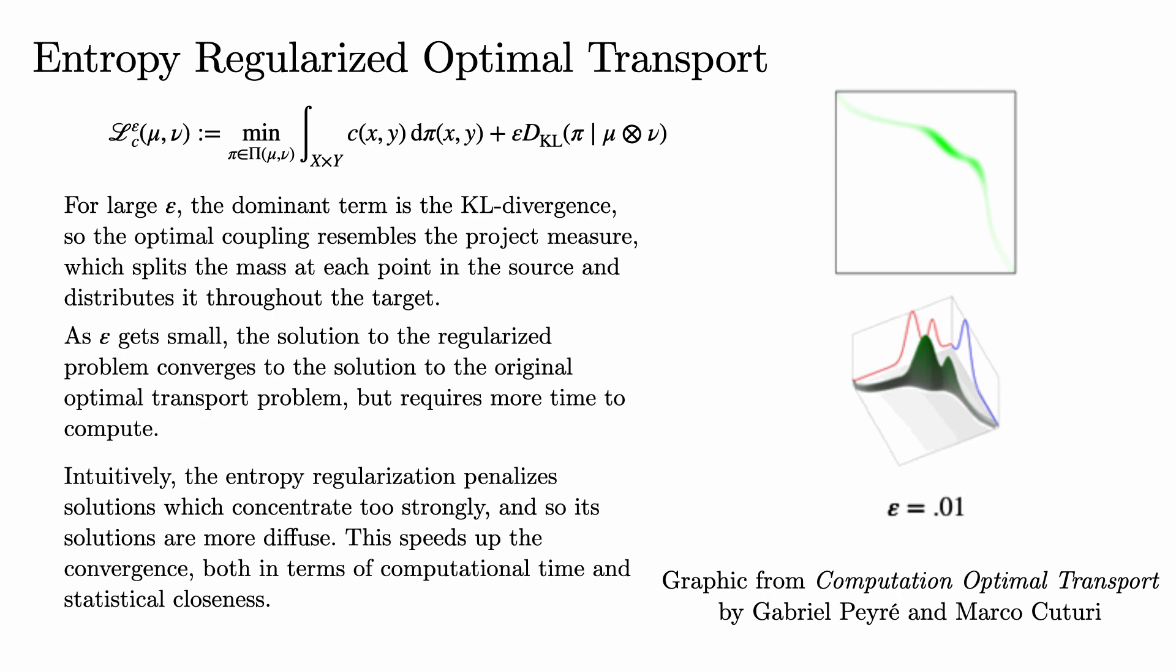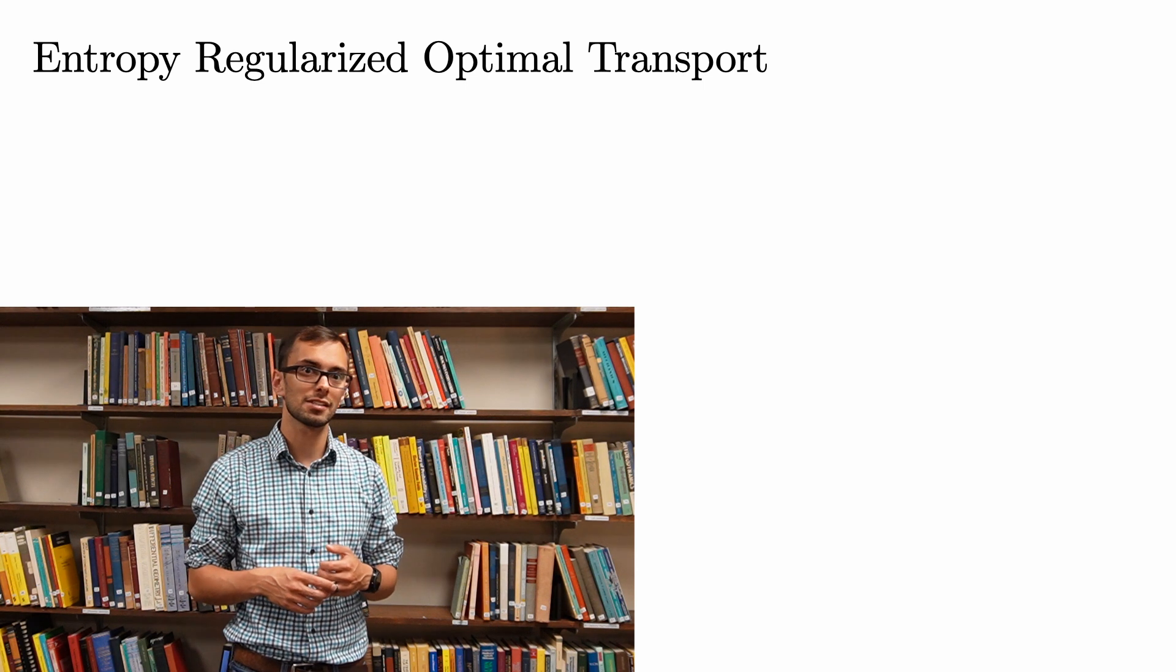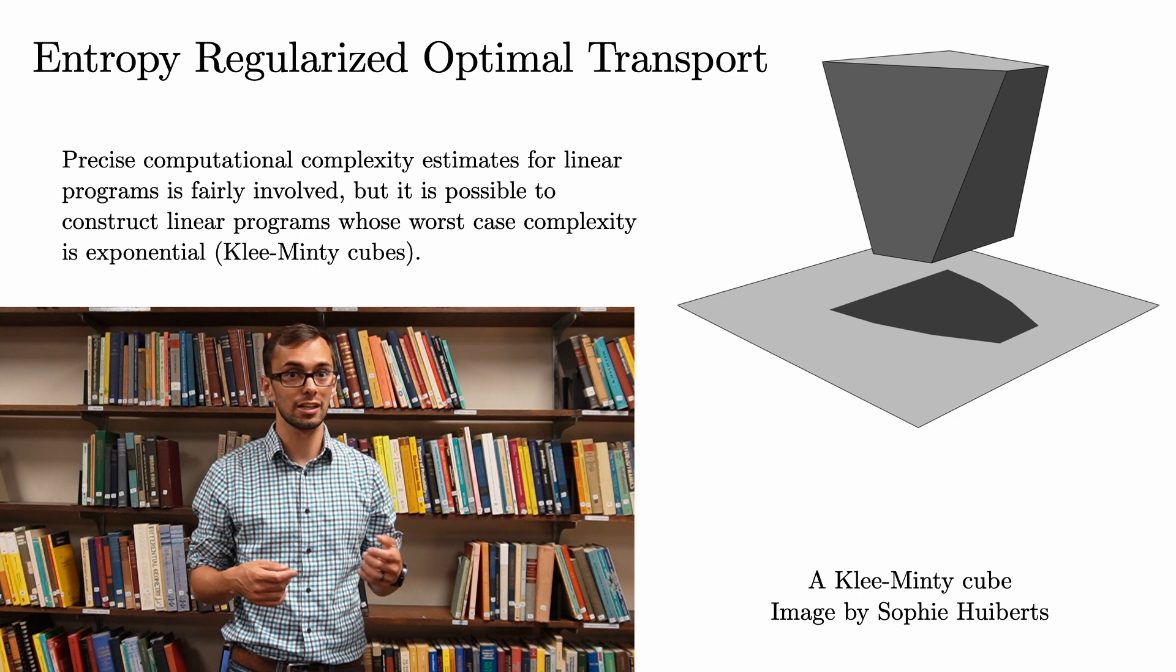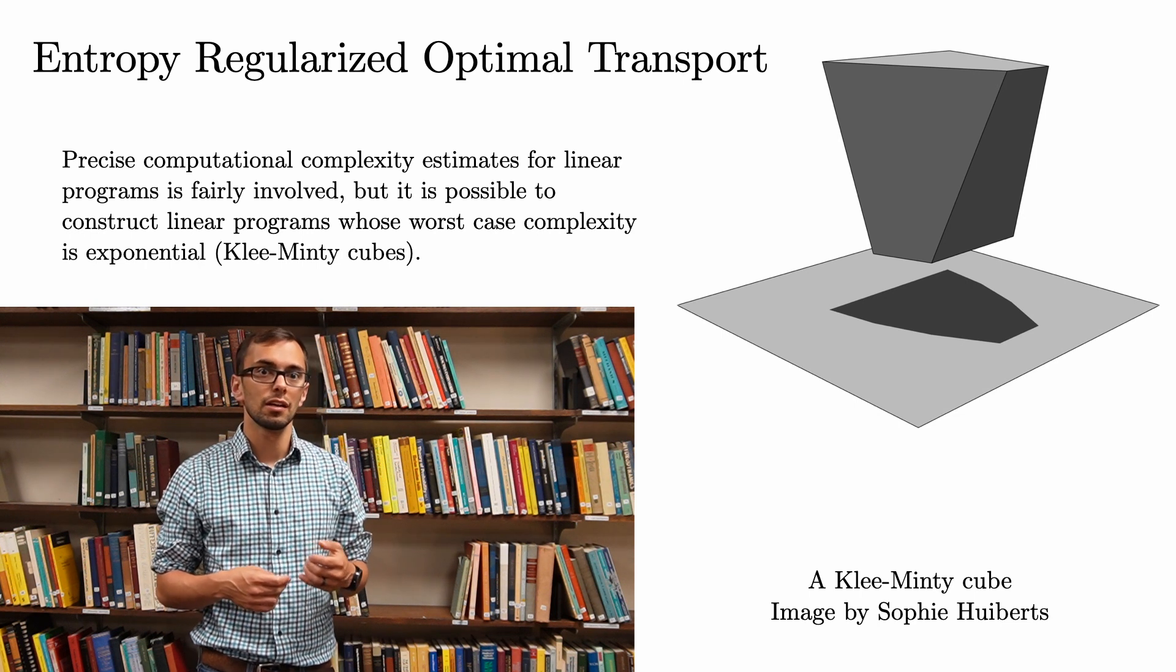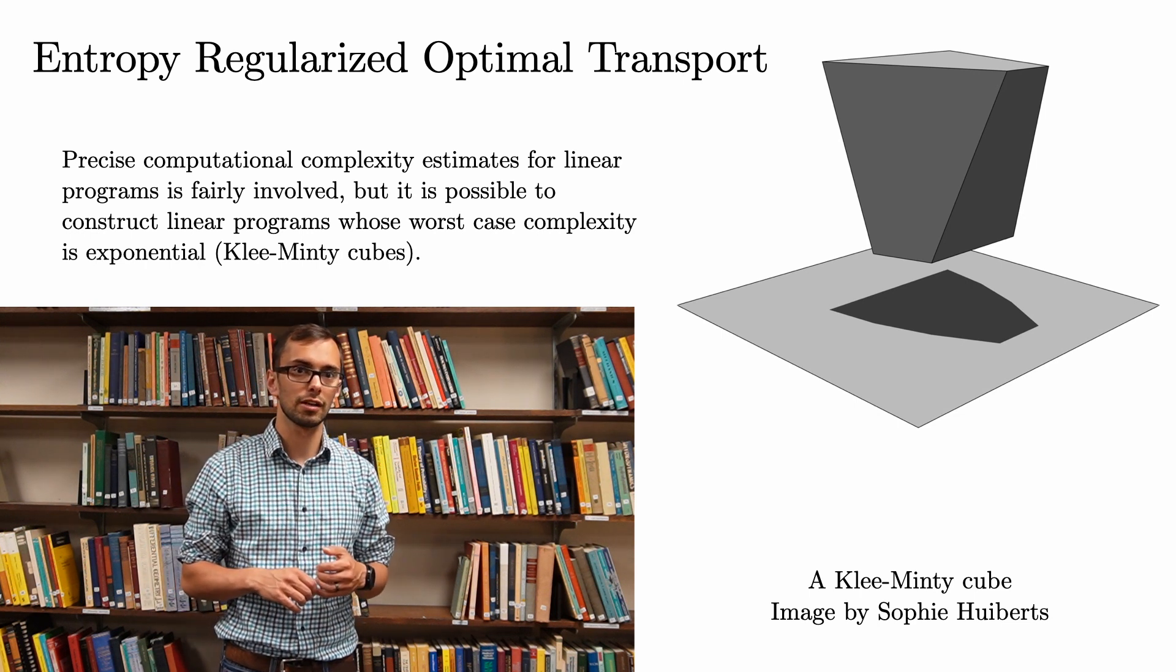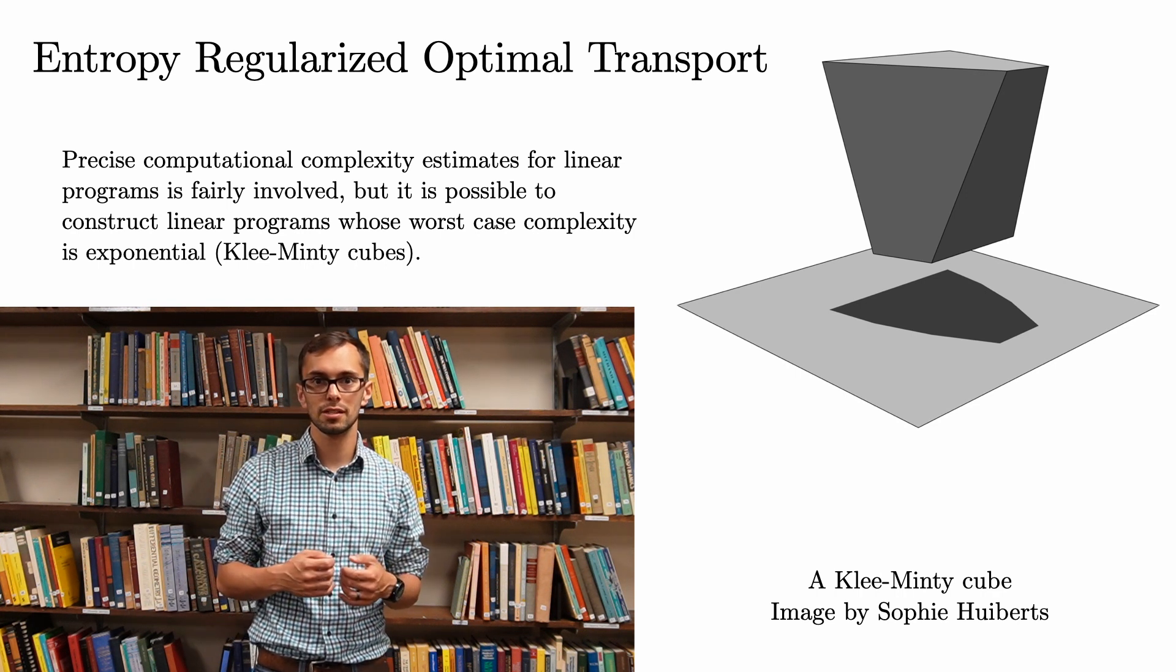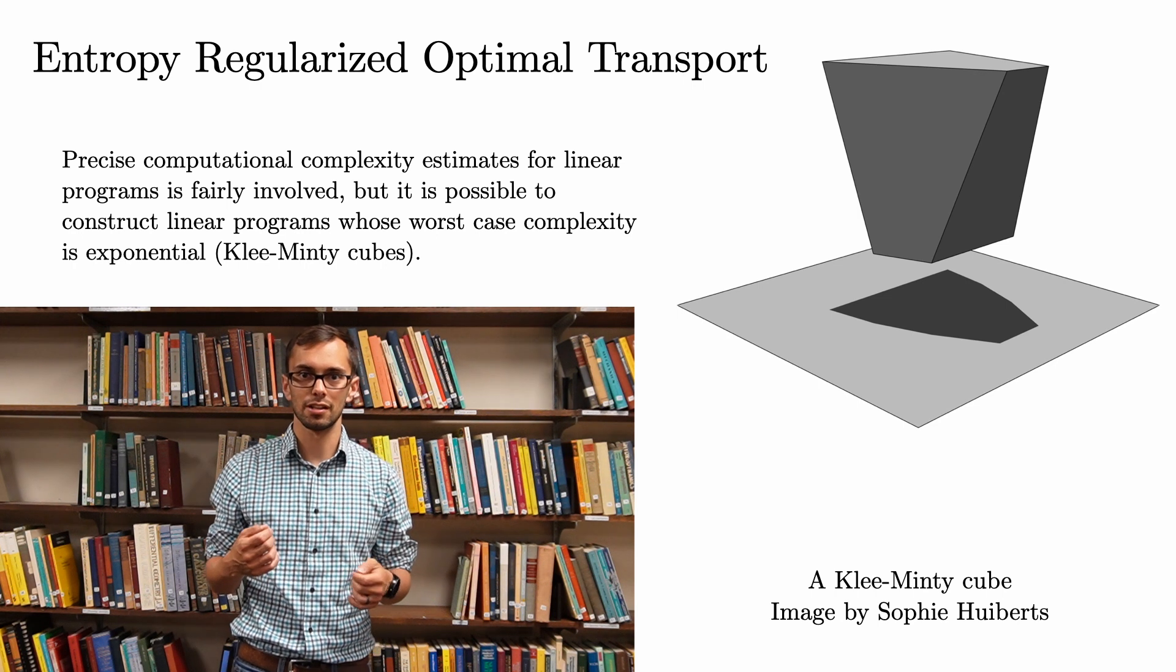Intuitively, the entropy term penalizes solutions which concentrate too strongly, and so its solutions are more diffuse. This speeds up the convergence, both in terms of computational time as well as statistical closeness. And how much does this speed things up? Well, the computational complexity for linear programs is a pretty complex topic.